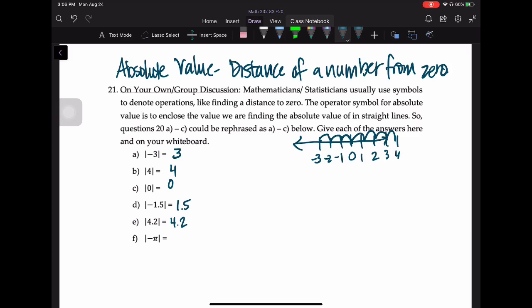What you should notice here is that the absolute value of a negative is a positive, and the absolute value of a positive is also a positive. That means that for f, the absolute value of negative pi is just positive pi.